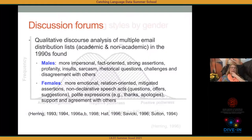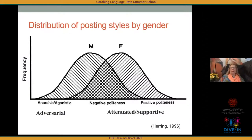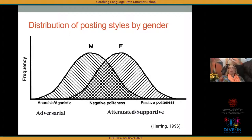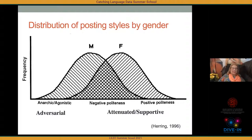This can be schematically visualized as two distributions with a large area of overlap in the middle where you can't tell from discourse style whether the writer is male or female. But towards the right is a style I characterized as 'attenuated and supportive,' using positive politeness, used almost exclusively by women. At the far left is a style I characterized as 'adversarial' — anarchic or agonistic — used at the extreme pretty much only by men.